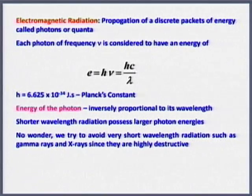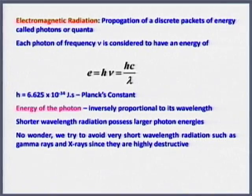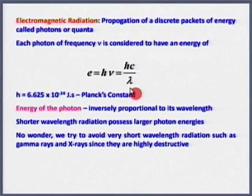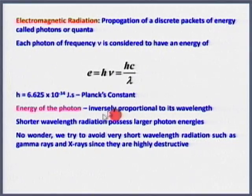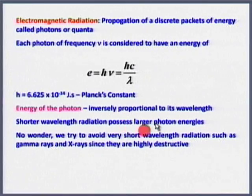Electromagnetic radiation propagates through discrete packets of energy called photons or quanta — a combination of wave theory and quantum theory. Each photon of frequency ν has energy E = hν = hc/λ, where h = 6.625×10⁻³⁴ J·s (Planck's constant). Energy is inversely proportional to wavelength, so shorter wavelengths produce larger photon energies — that is why x-rays are highly destructive.